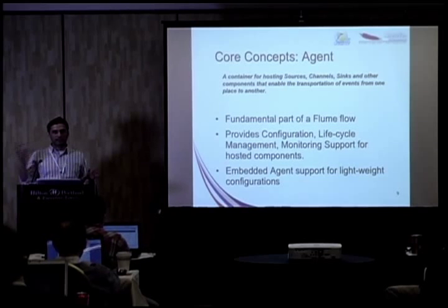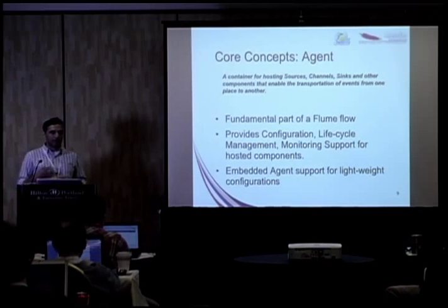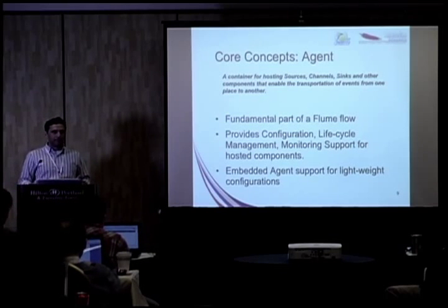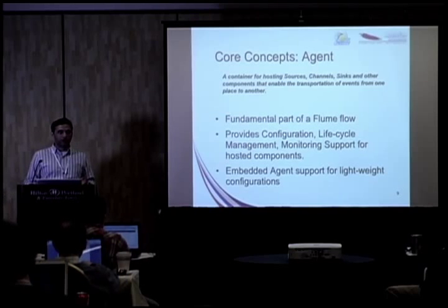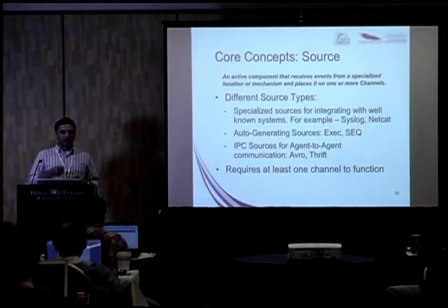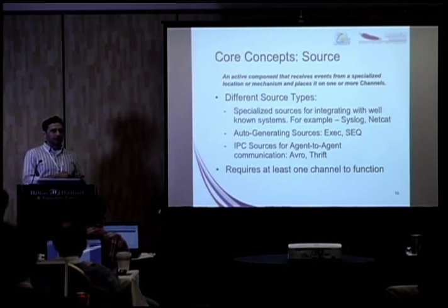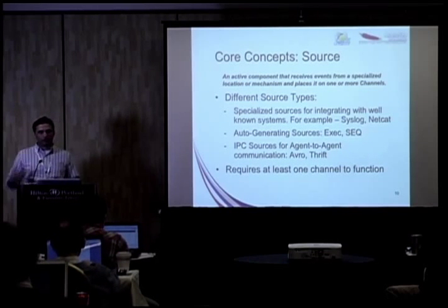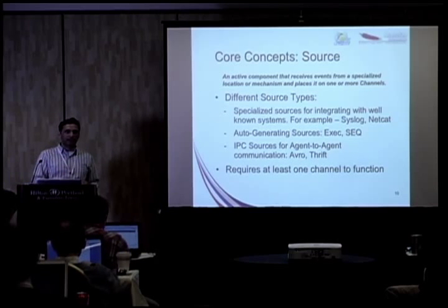A client sends data into agents, and there's a set of agents — one behind the other — forming a pipeline. An agent is basically a container which runs all of the Flume components. The first component that comes in the pipeline is a source. A source is essentially a component that receives events from upstream. If your clients are running in your server nodes, they would use some IPC mechanism to send those events over to an agent, and there would be a source operating within the agent that will receive that event.